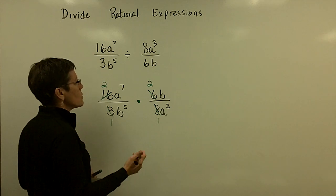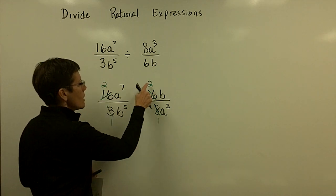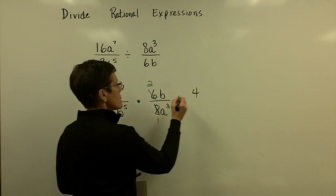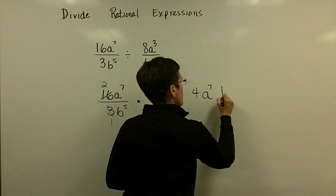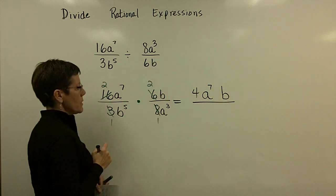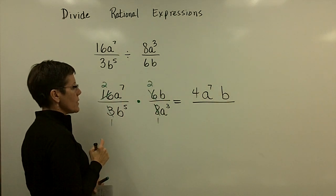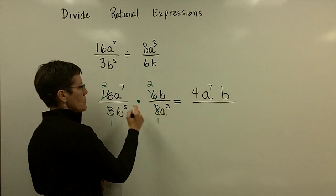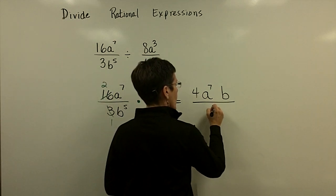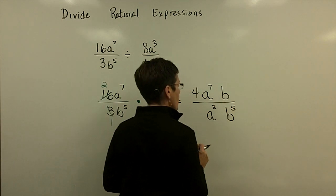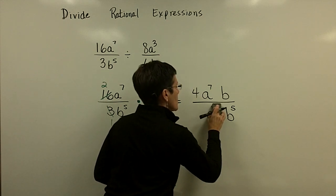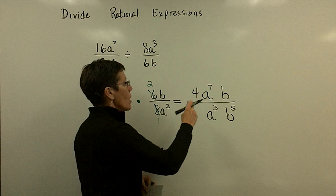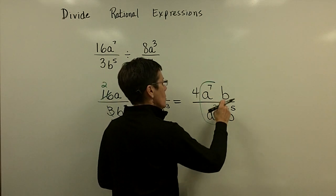I'm going to go two times two is four, and a to the seventh, and then b to the first in the numerator. Down here I have a one and a cubed b to the fifth, so I'll put a cubed b to the fifth there and neaten that up a little bit.